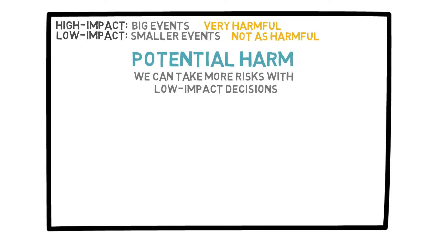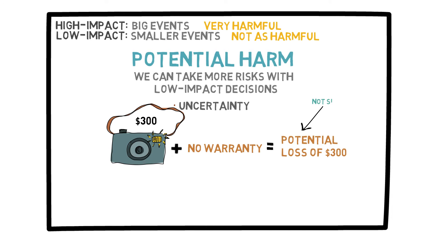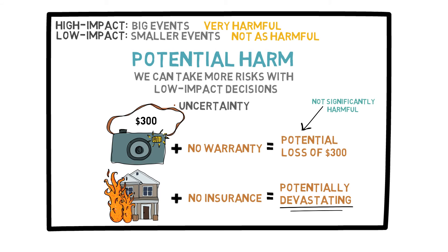Let's look at the example of buying insurance. This is essentially a decision under uncertainty because you don't know if you are going to need to rely on this insurance or warranty. If you buy a new camera for $300 and don't purchase a warranty, you run the risk of losing $300 if you break it. However, this is not significantly harmful. On the other hand, when purchasing a house without insurance, the potential harm is extreme. If you don't purchase homeowner's insurance and your house burns down, the harm would be devastating.